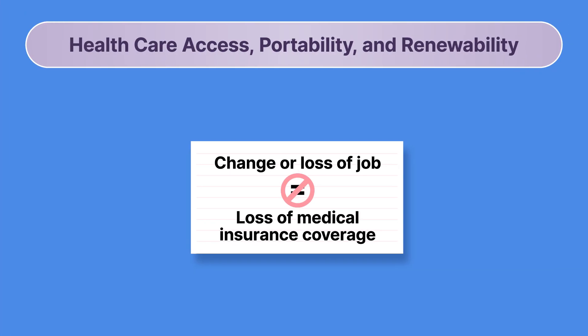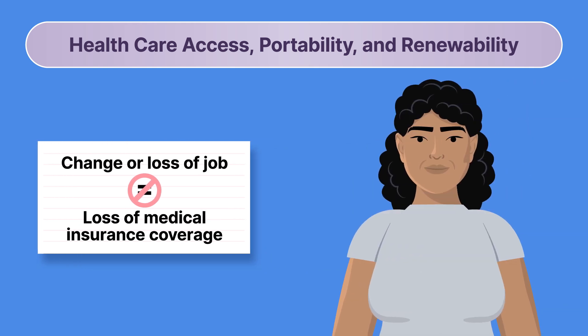The Health Care Access, Portability, and Renewability Provision ensures that people will not lose their medical insurance coverage when they change or lose their jobs. This assurance comes from the law's requirement that people not be denied coverage for conditions covered under their previous health care insurance. This is particularly important for people with chronic or pre-existing conditions, because it means they cannot be denied insurance coverage for those conditions by future employers or policies purchased in the open marketplace.